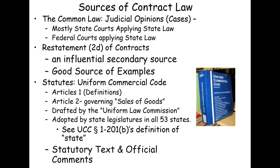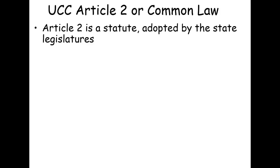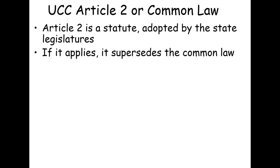Because we have two sources of contract law — UCC Article II and the Common Law — a critical issue is when Article II applies and when the Common Law governs. When there's a conflict, because Article II is a statute adopted by state legislatures, if Article II applies, it supersedes the Common Law. If the Commercial Code doesn't apply, then Common Law rules govern the transaction.